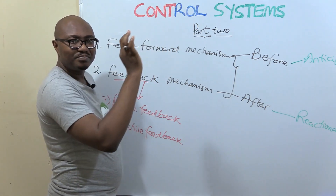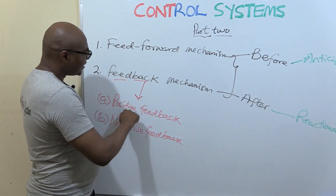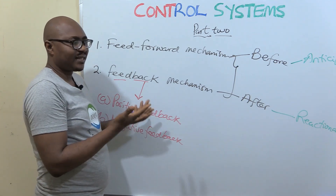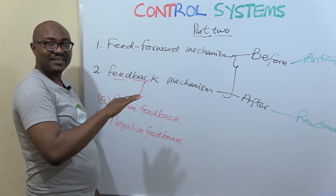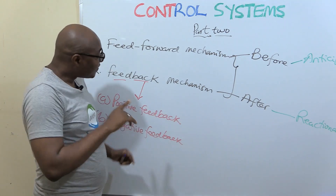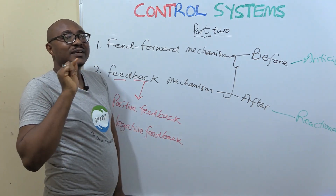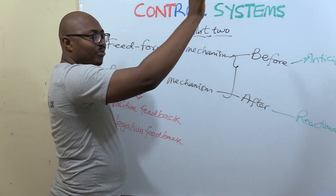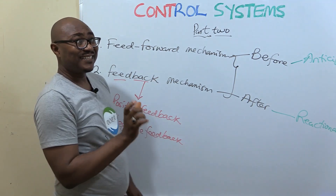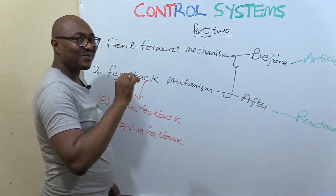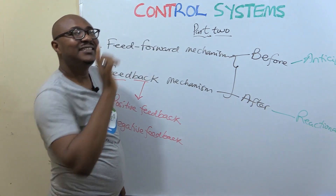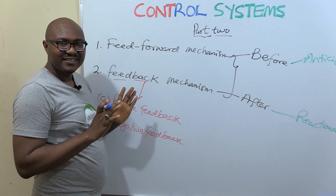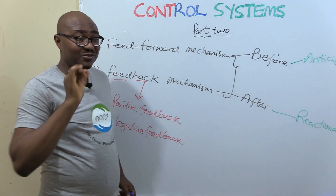In positive feedback, if a change occurs that takes a particular variable up, it goes through the control center, which then amplifies the change — taking it even higher. When sensed again, it goes up even more. Positive feedback promotes change — it amplifies rather than corrects.